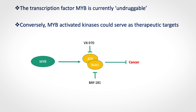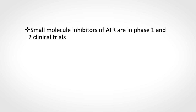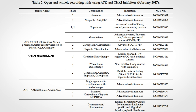We initiated experiments to see whether we can use these drugs to treat ACC. We looked at the expression of ATR and MIB in patient samples and found they are co-expressed, which is important for patient stratification. We think both MIB and ATR could be used as biomarkers to guide treatment.